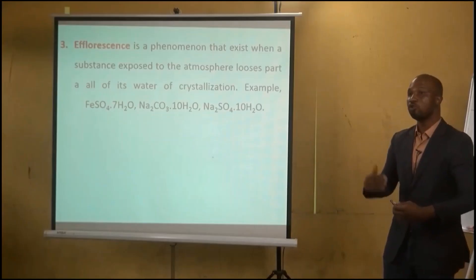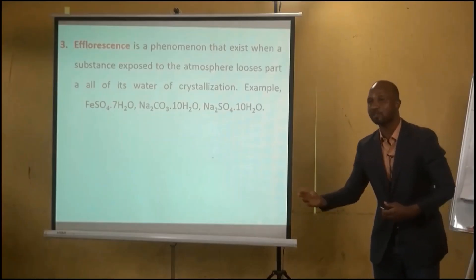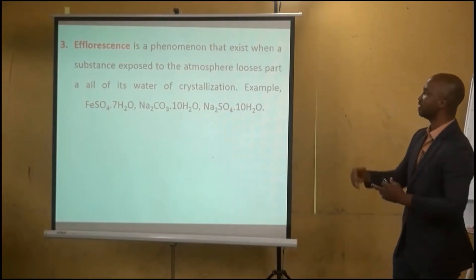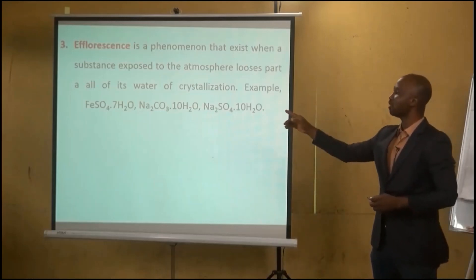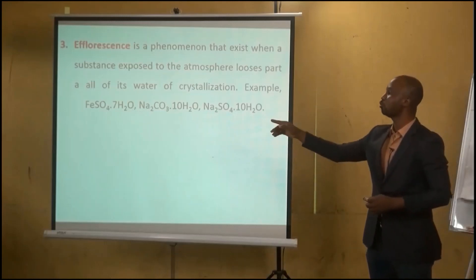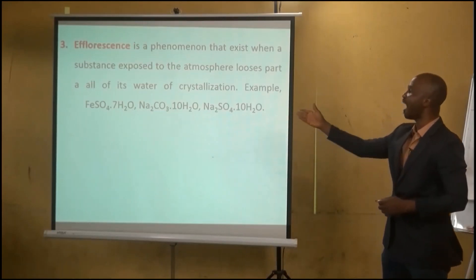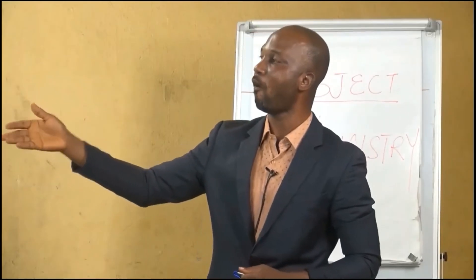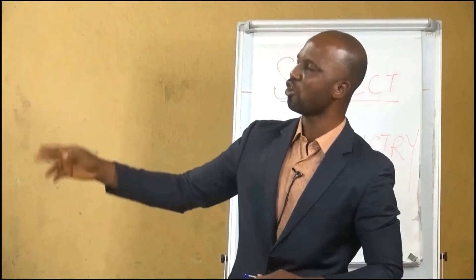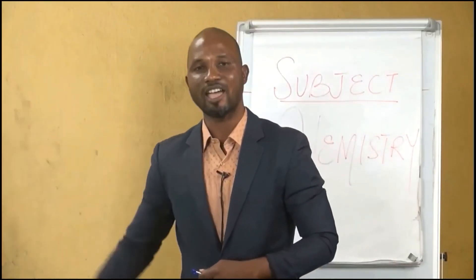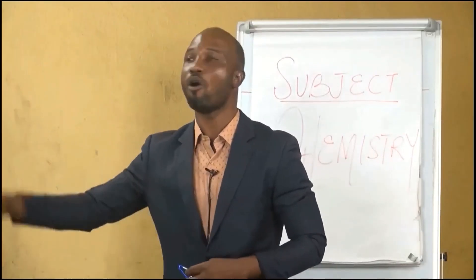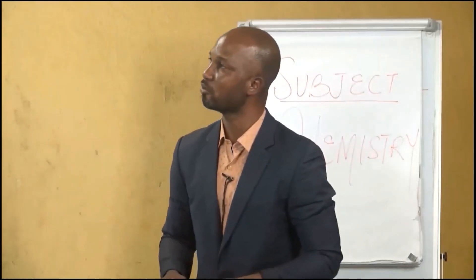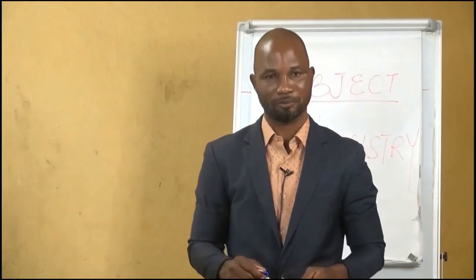Efflorescence is different from the other two — it is a phenomenon where a substance exposed to the atmosphere loses part or all of its water of crystallization. Examples include iron(II) tetraoxosulfate(VI) heptahydrate, sodium trioxocarbonate(IV) decahydrate, and sodium tetraoxosulfate(VI) decahydrate — these are all efflorescent salts.